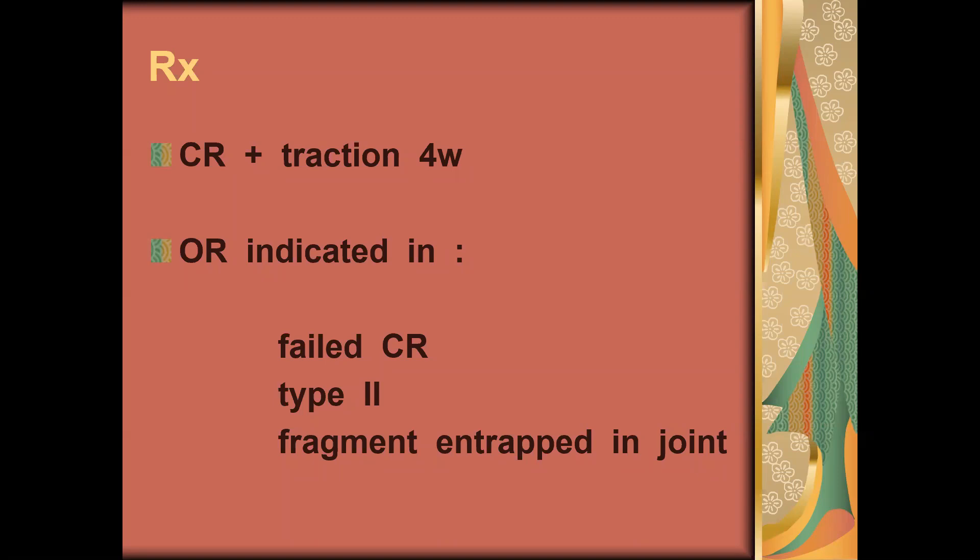Sometimes we need open reduction. When? When closed reduction failed, or when we have type two dislocation with large fragment from the acetabulum. Also when the fragment is entrapped inside the joint. This fragment will make reduction difficult, and if it stays intra-articular it will cause osteoarthrosis in the future.